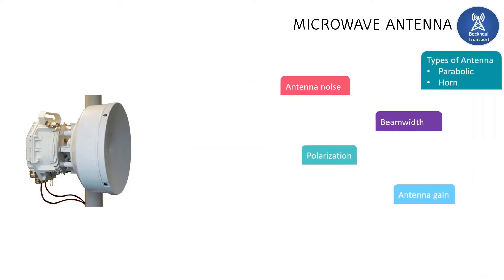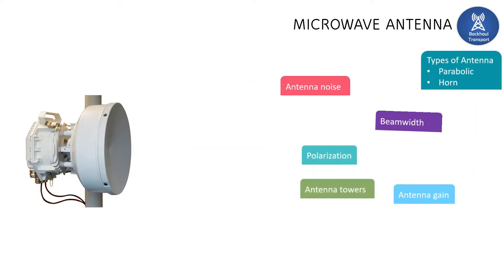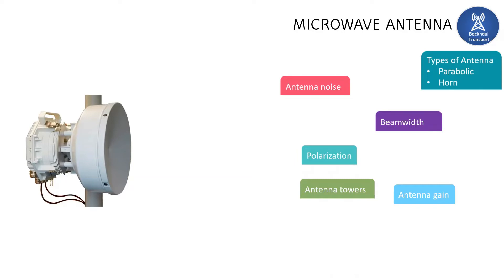The topics we are going to learn about microwave antennas today include: types of antennas — parabolic and horn; antenna gain and beam width; polarization of the antenna; antenna towers, since there is a lot of dependency between towers and the microwave antenna; and finally, antenna noise.